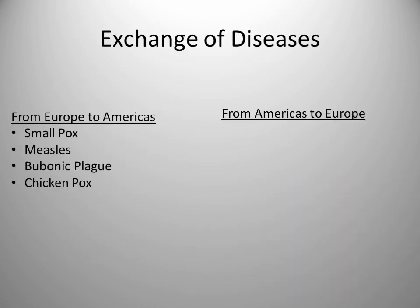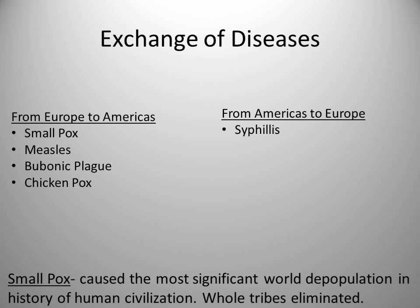Diseases. Some scholars have insisted that the exchange of disease in the Americas is the most significant aspect of the Columbian Exchange. Particularly from Europe to the Americas, diseases like smallpox, measles, the plague, and even chickenpox — but particularly smallpox — were absolutely devastating to Native American populations. In some places, Native American populations basically ceased to exist from the scale of devastation from smallpox.